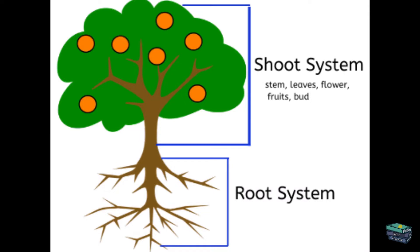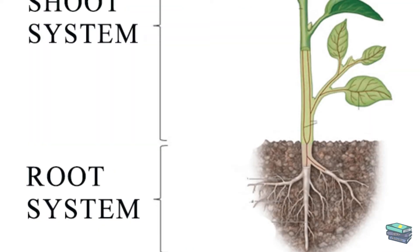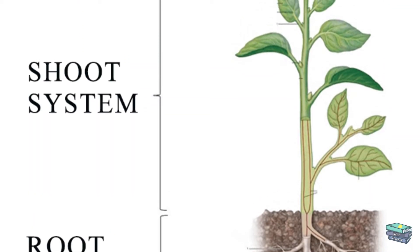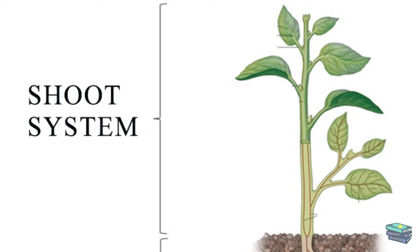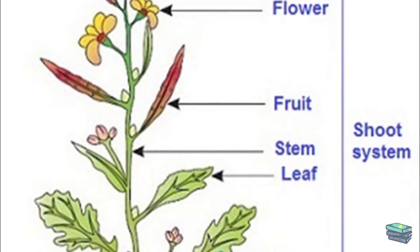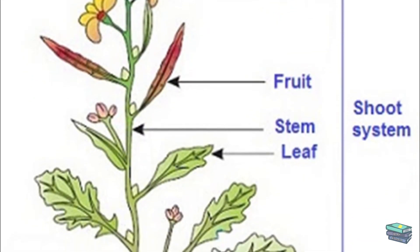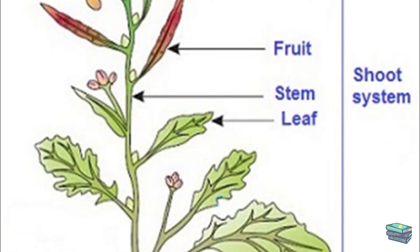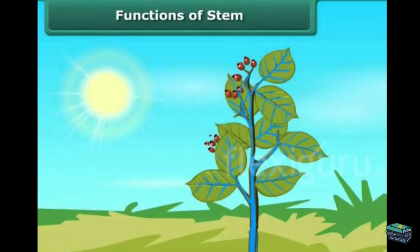What is the shoot system? The portion of the plant above the ground is the shoot system. The shoot system includes stem, leaves, buds, flowers, fruits, and seeds. What are the important functions of the stem? There are three important functions of the stem.